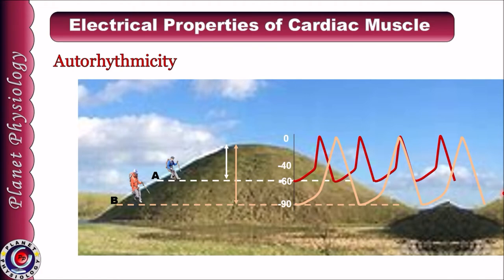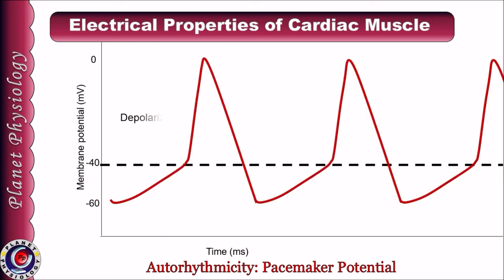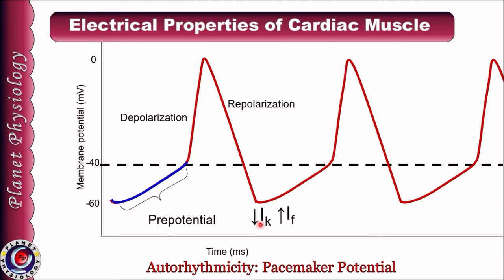Resting membrane potential of pacemaker cells slowly drifts towards the threshold, and once it reaches the threshold it gets depolarized, followed by repolarization. This slowly changing resting membrane potential is known as pacemaker potential or pre-potential. At the end of repolarization, as the value reaches minus 60 millivolts, potassium conductance decreases — potassium channels close and potassium efflux stops. At the same time, there is opening of funny sodium channels, so sodium influx begins. These are HCN channels — hyperpolarization-activated cyclic nucleotide-gated channels.